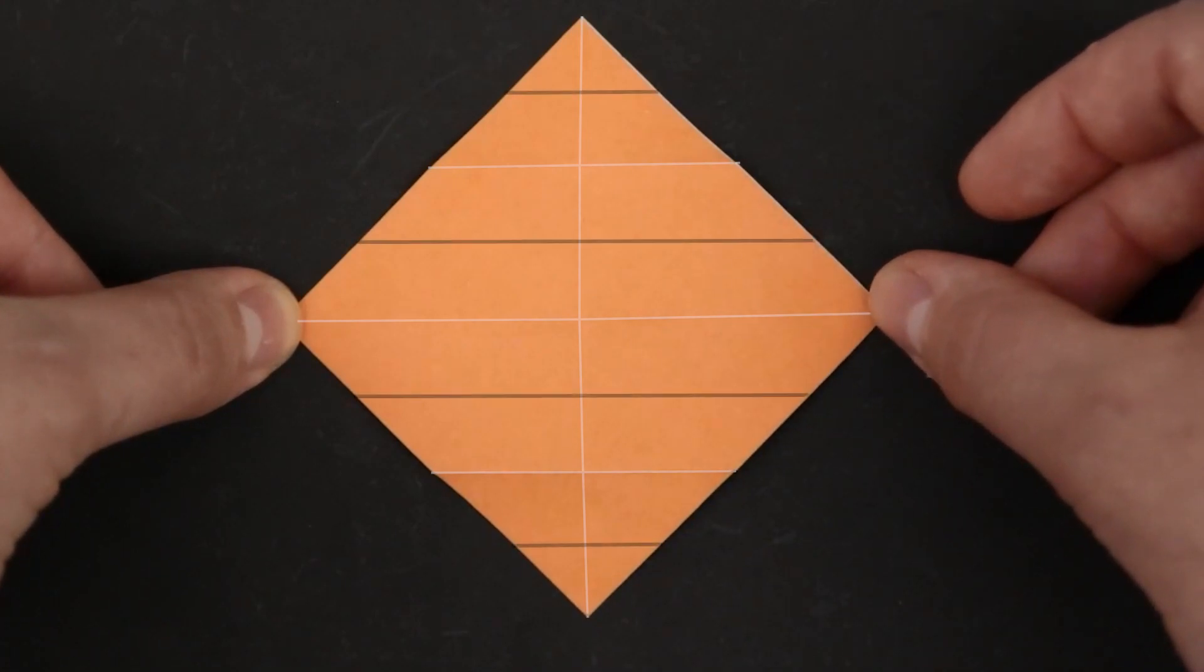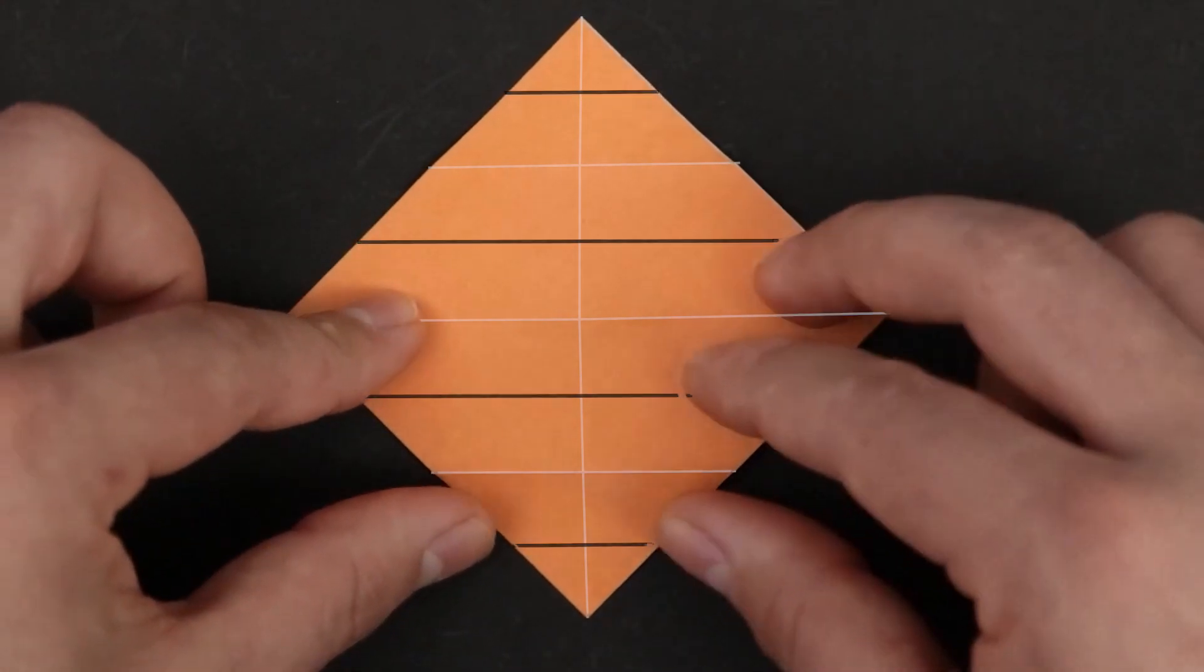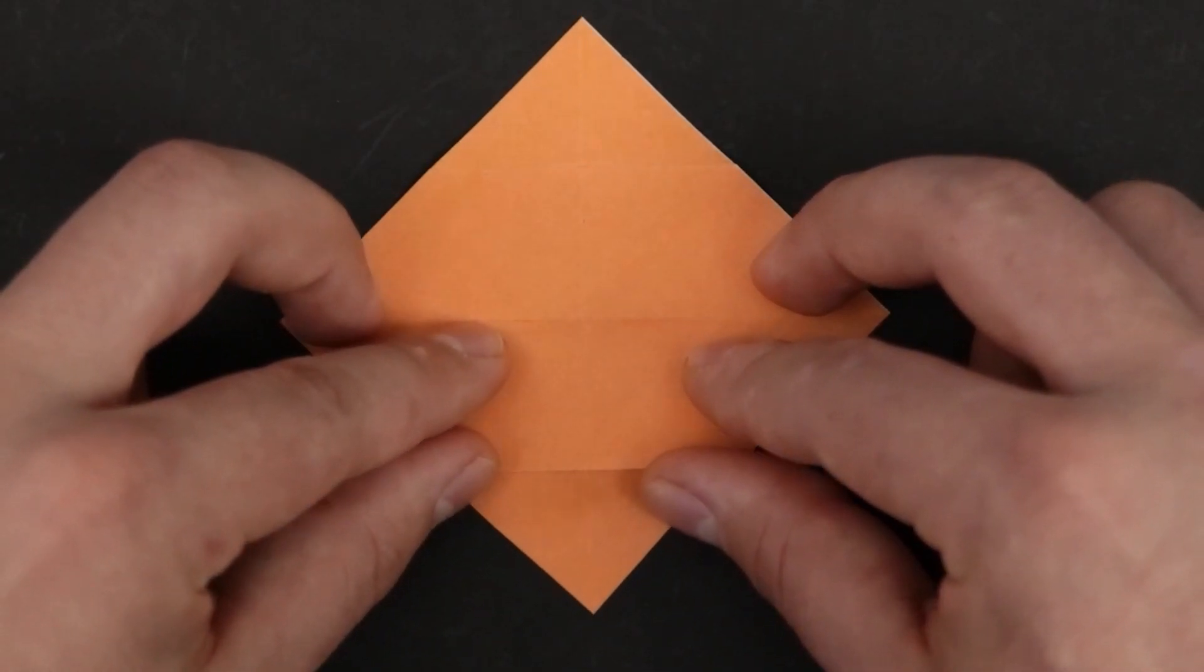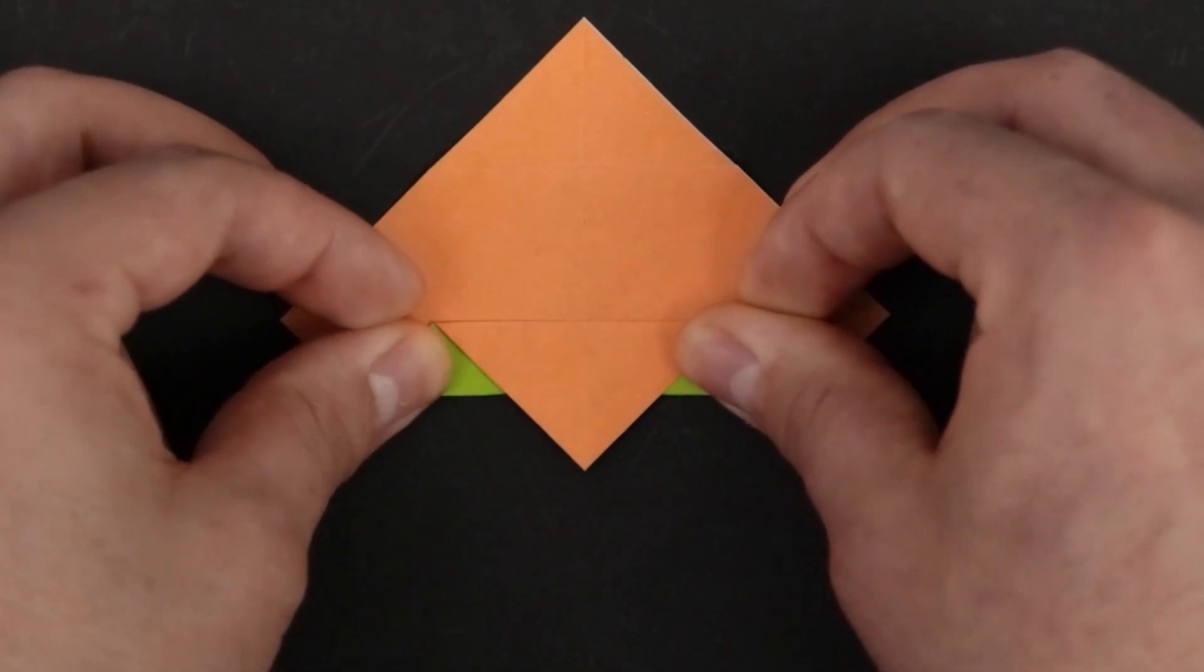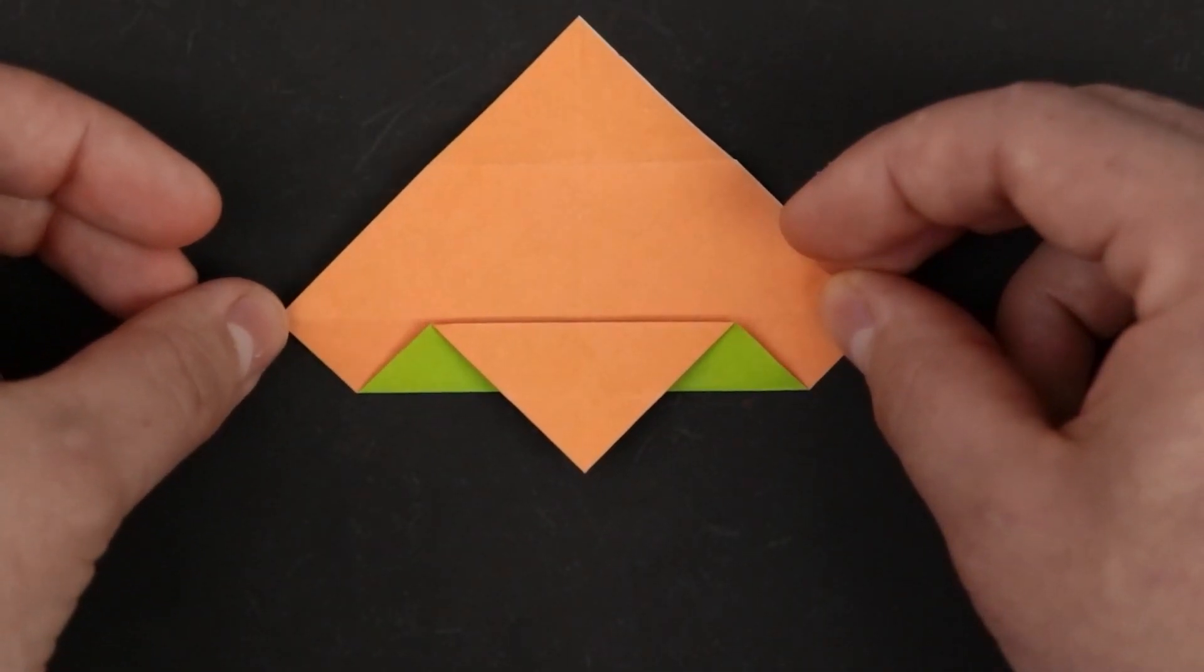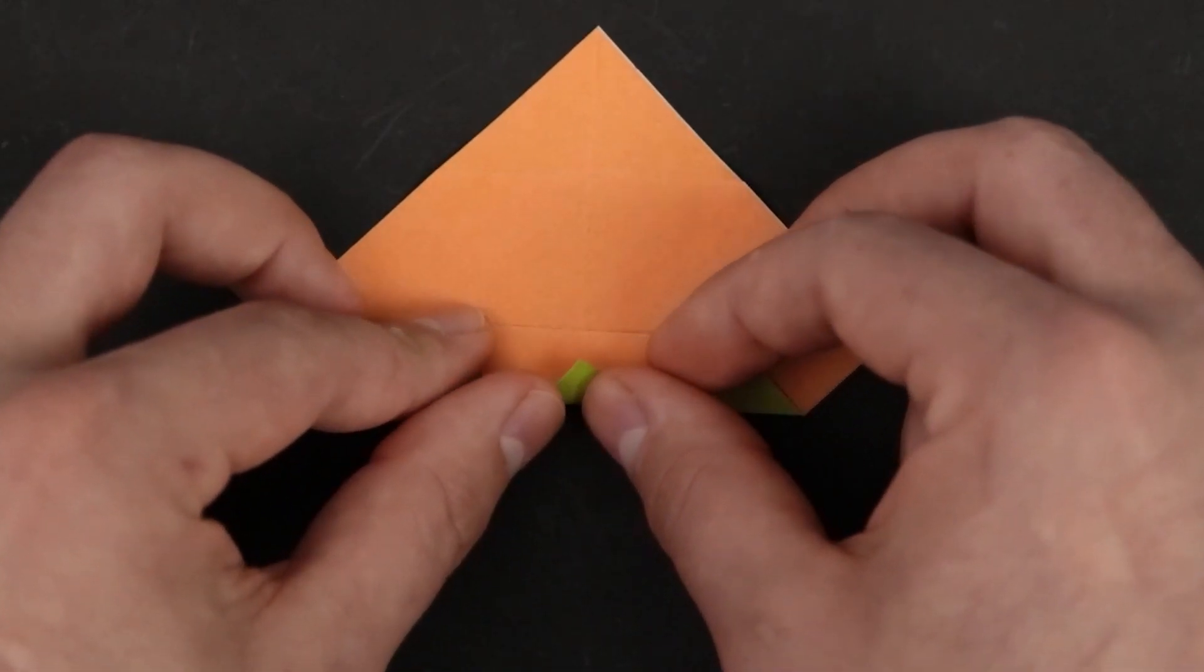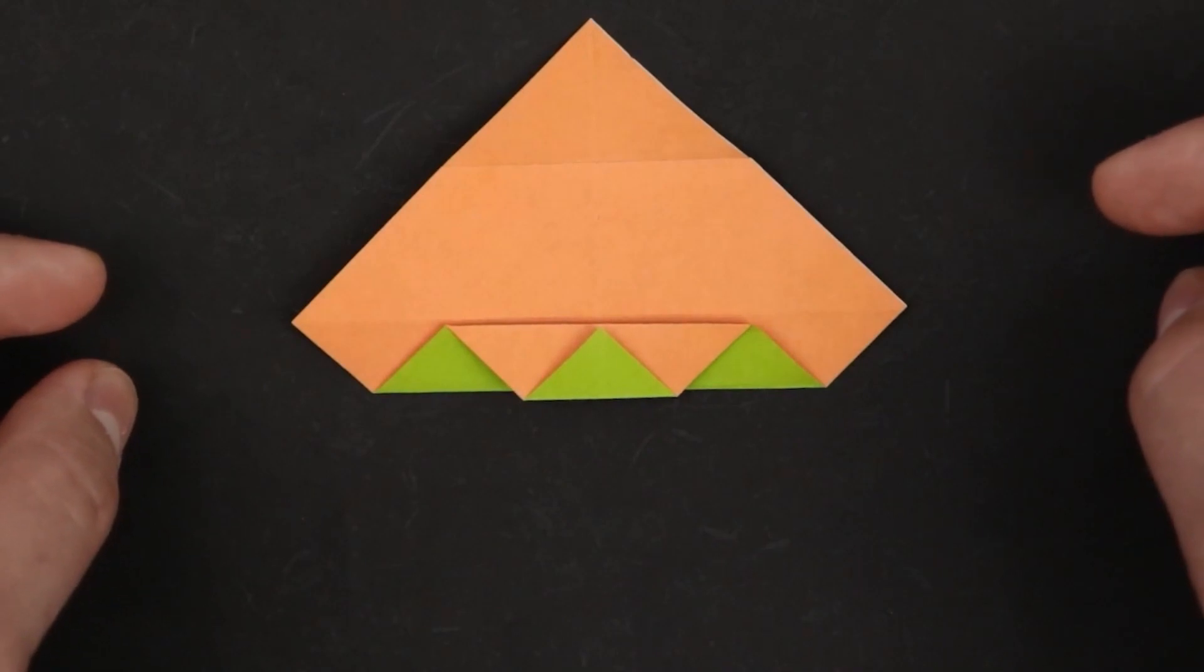And in this position let's divide into 8. Just bring the crease we just made to the middle, then the corner to the middle as well, and repeat on the top.